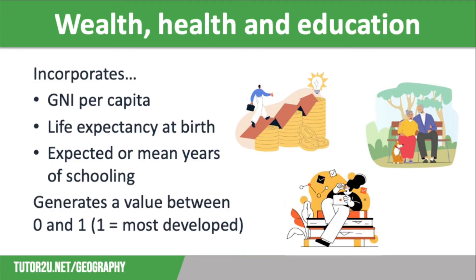The index is calculated by bringing these values onto the same scale, which is a scale of 0 to 1. The indicators are then combined. Firstly, the mean is calculated of the two values that represent education, and then this value is added to the values attributed to wealth and health, where another average is taken, resulting in an overall index score between 0 and 1, with 1 being the most developed.